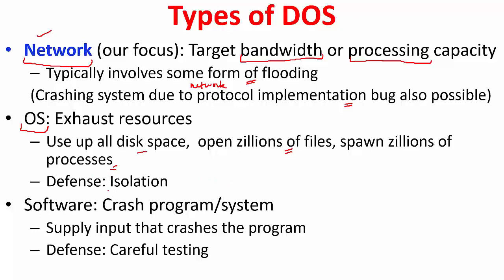For OS-level attacks, the defense is often isolation — whatever process is running, you ensure it is isolated from other processes, or ensure that the amount of resources given to it is contained so that you don't exhaust your resources. You can also launch DOS by leveraging some vulnerability in the software where you crash the program or system by supplying some special input; the defense here is careful testing. We will focus mainly on network-based DOS attacks.